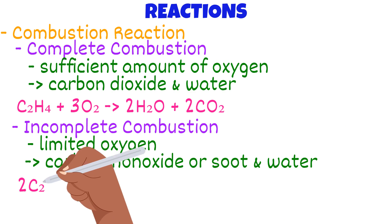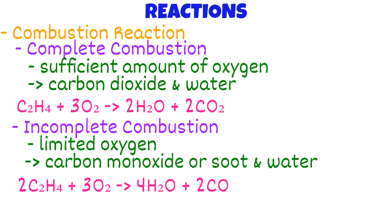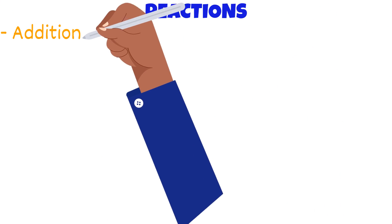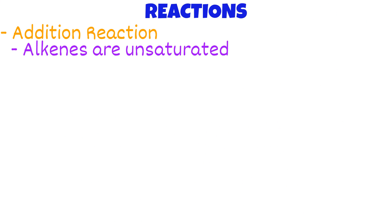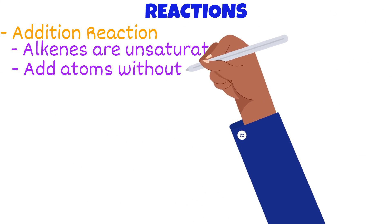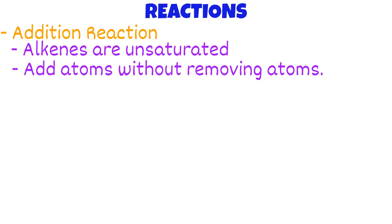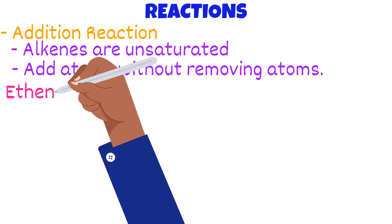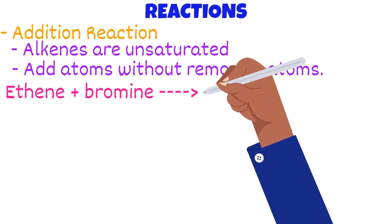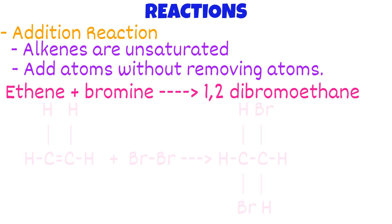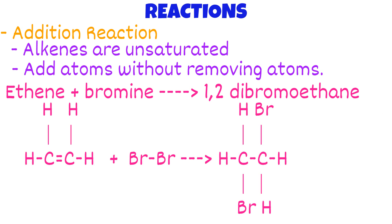Here is the same reactants as before but with limited oxygen. Another reaction involving alkenes is the addition reaction. Since alkenes are unsaturated, you can add an atom to the molecule without needing to remove any atoms. For example, ethene plus bromine water would produce 1,2-dibromoethane. The carbon-carbon double bond has been broken down to allow two more atoms. Now this molecule has turned into an alkane since there is no longer a double bond.